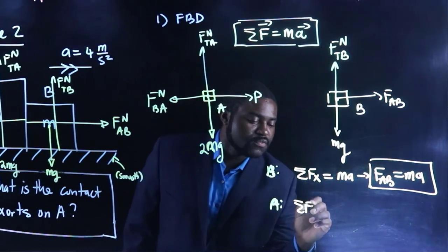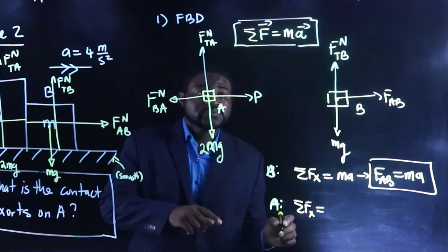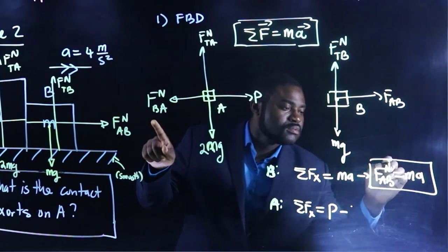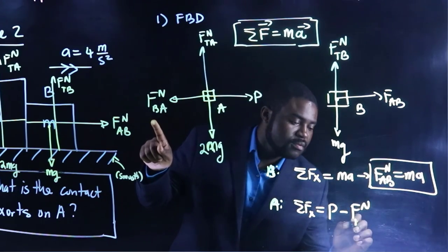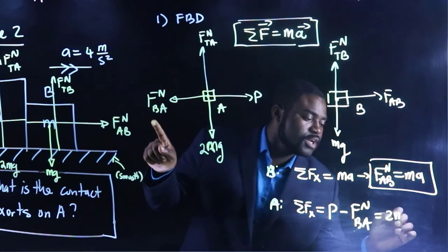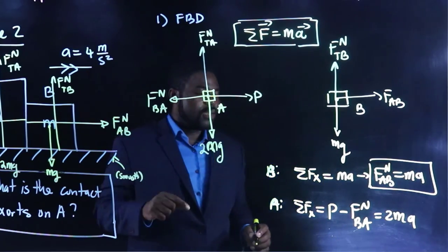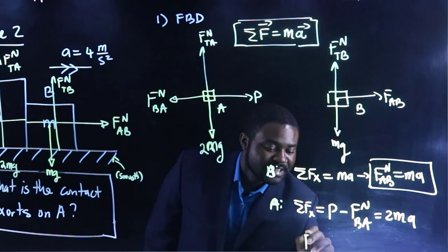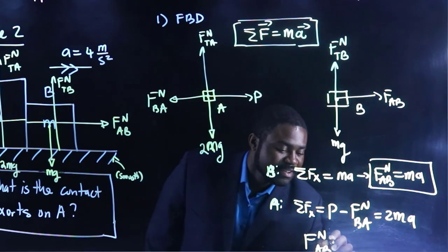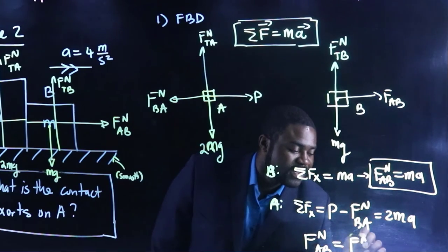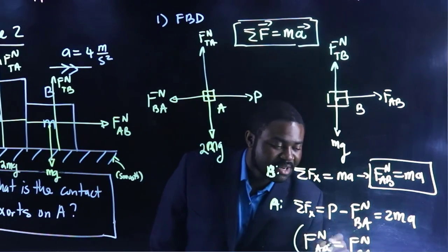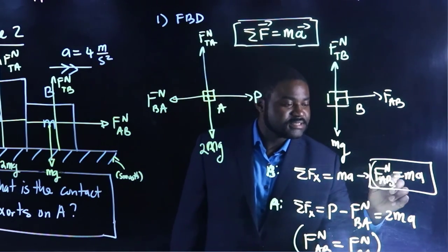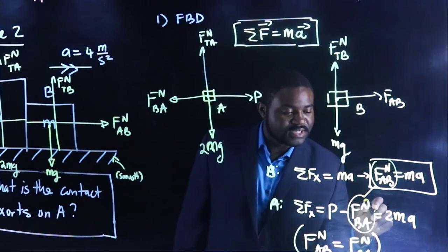So, the sum of forces in the x direction is P minus FN BA equal to 2MA. Now, here is the trick. By Newton's third law of motion, FN AB is equal to FN BA. These are magnitudes, remember. So, this is equal to this.